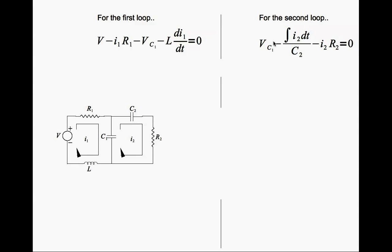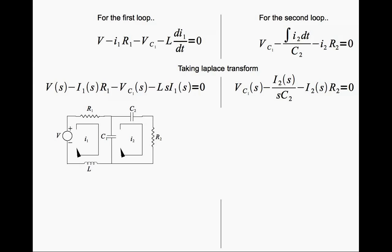These are time domain equations. Notice that V, I1, VC1 and I2 are functions of time. We can take a Laplace transform, so we take Laplace transform of both equations and that's what we get. So I1 of S is the Laplace of I1 of T, and S times I1 of S is the Laplace transform of DI1 of DT.